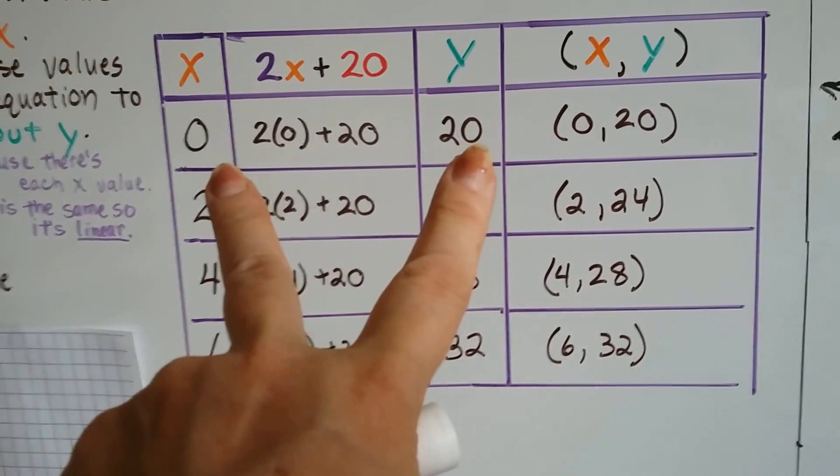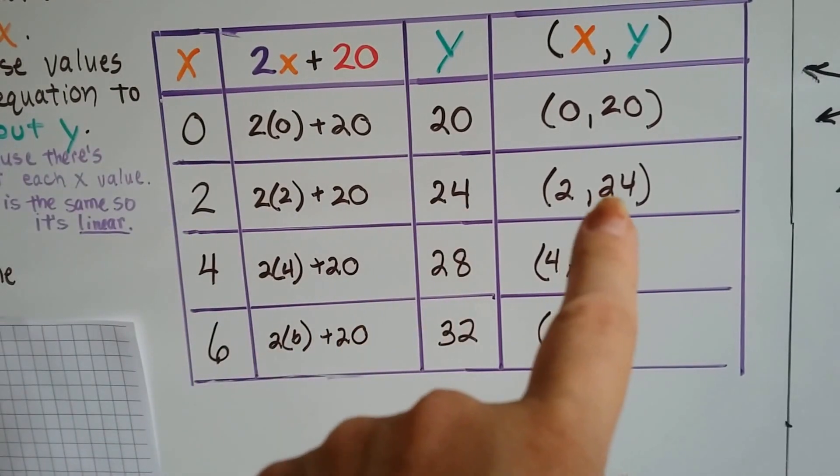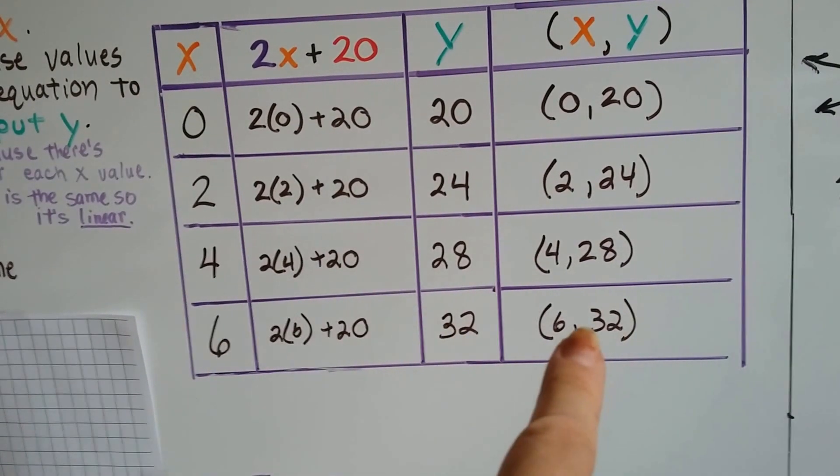And then if you look, 0, 20, that's our coordinates. That's our ordered pairs. 2, 24. 4, 28. 6, 32. Those are our x and y values for our ordered pairs.